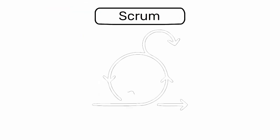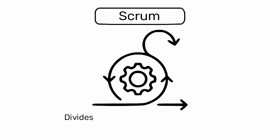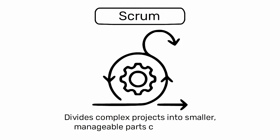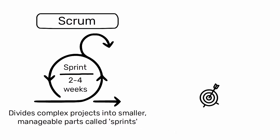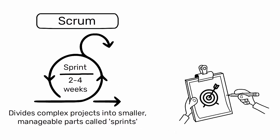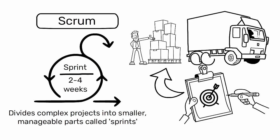Scrum is a framework that divides complex projects into smaller, manageable parts called sprints. Each sprint typically lasts two to four weeks, and the goal is to deliver a potentially shippable product increment at the end of each sprint.